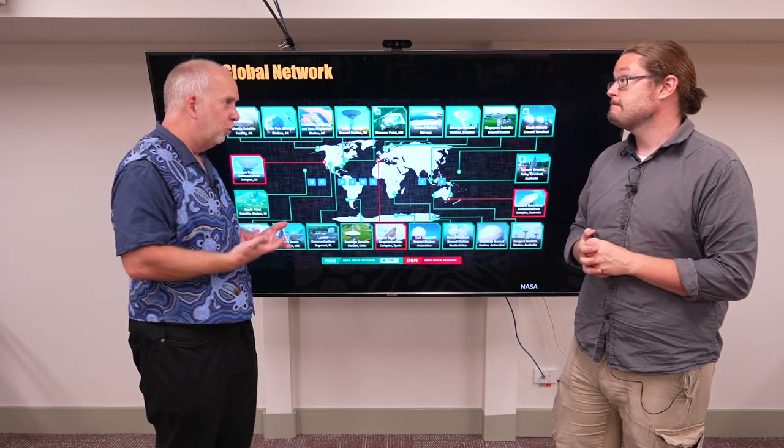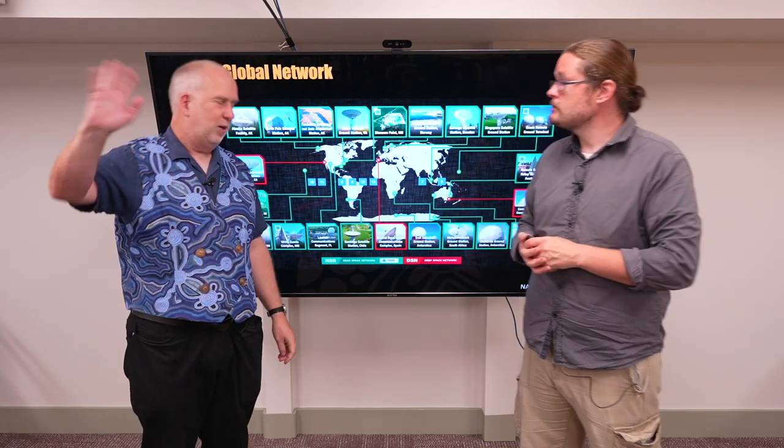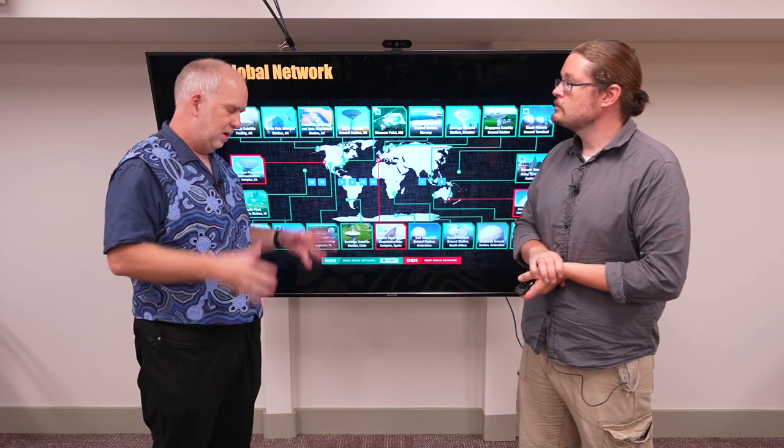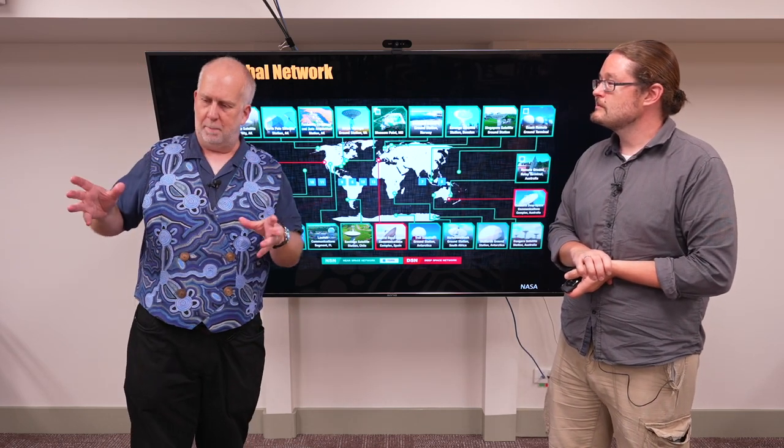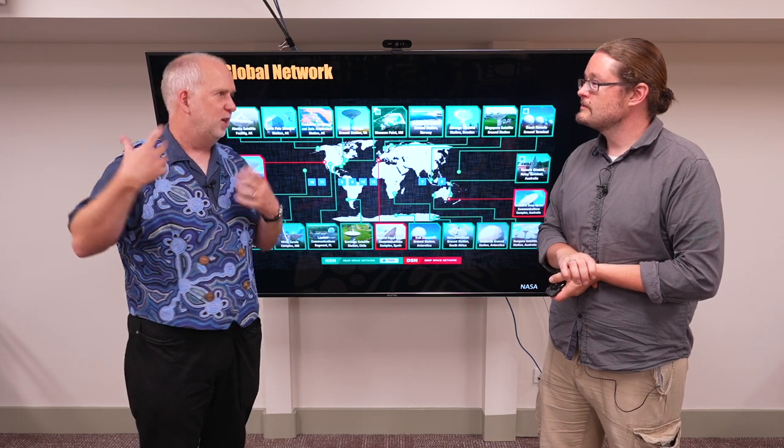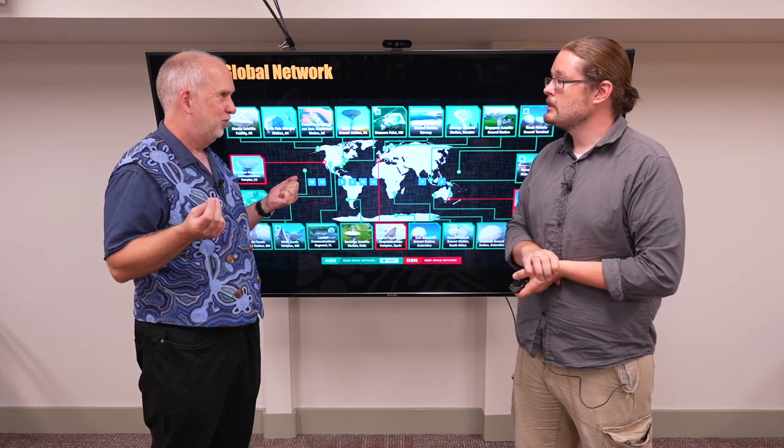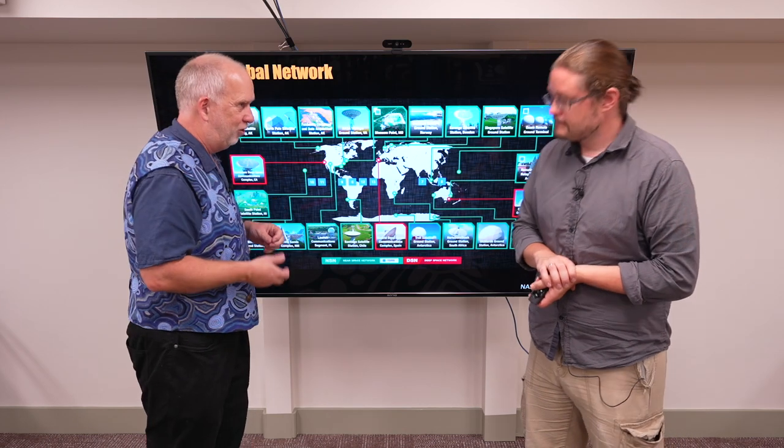This is going to depend what sort of orbit we're talking about. So if we're talking about something that's way out in space like at Mars or Pluto or something like that, then basically we're going to need at least two stations on opposite sides of the Earth. Yes, that's right. So when it rises from one it sets on the other.